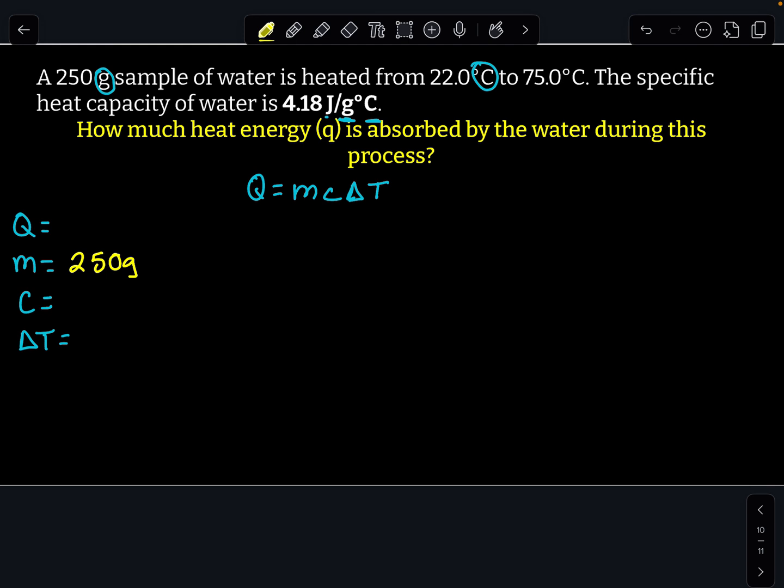And remember, delta t is the change. So I need to do my final temperature, which is 75 degrees Celsius, and subtract it from my initial temperature, which is 22 degrees Celsius, to get my delta t. So 75 minus 22 is going to equal 53. So 53 degrees Celsius is my delta t.